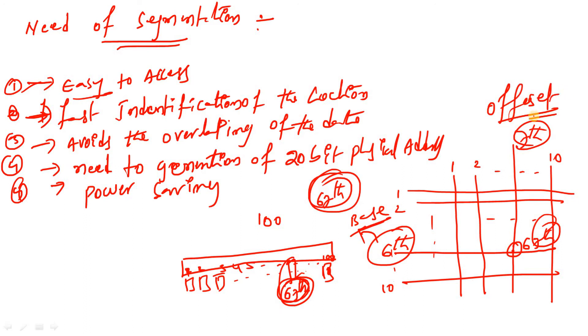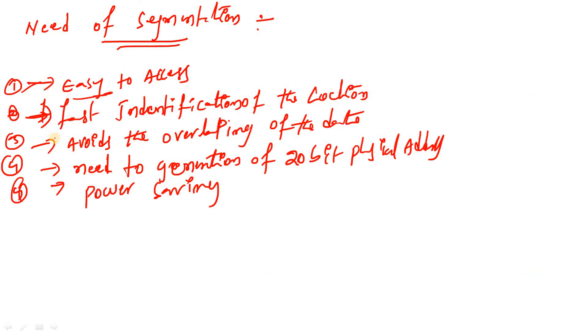In memory segmentation, the sixth row acts as the base address of the segment, and the seventh column acts as the offset address of the segment.